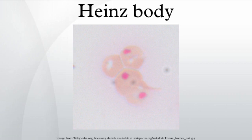Heinz bodies are inclusions within red blood cells composed of denatured hemoglobin. They are named after Robert Heinz, a German physician who in 1890 described these inclusions in connection with cases of hemolytic anemia.